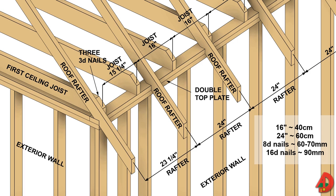Ceiling joists are an important structural factor in roof systems. They secure the tops of the walls in place and prevent the weight of the roof from pushing walls apart. Ceiling joists usually run in the same direction as roof rafters, and are usually spaced 16 inches on center, while roof rafters are spaced 24 inches on center. The following nailing schedule is recommended for ceiling joists and roof rafters at exterior wall plates: ceiling joists to wall plates — toenail 8D nails; ceiling joists to parallel roof rafters.